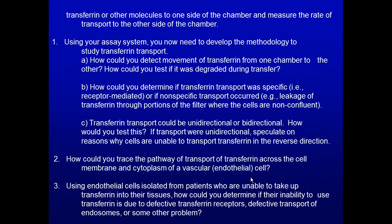The conference questions ask: how do you determine if transferrin transport is specific or non-specific? How can you tell if transport is unidirectional or bidirectional? If transferrin transport is unidirectional, how would you speculate it goes from apex to base but not vice versa? How would you trace its pathway with electron microscopy and immunogold? And using endothelial cells from a patient unable to take up transferrin, how would you determine if the defect lies in the transferrin receptor or the transport endosome system?